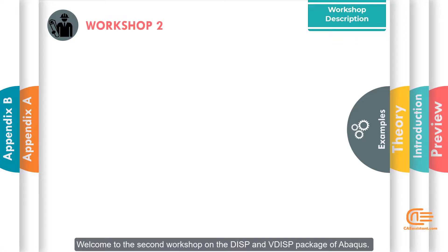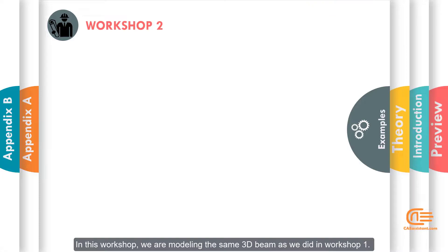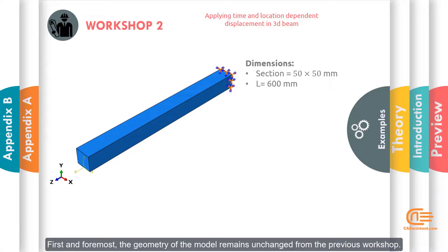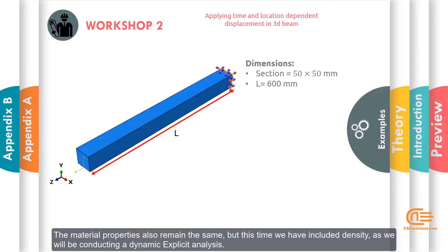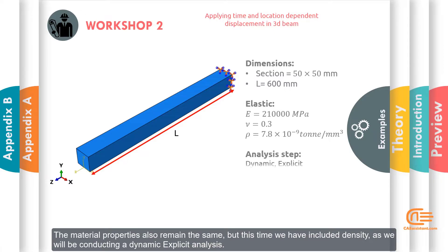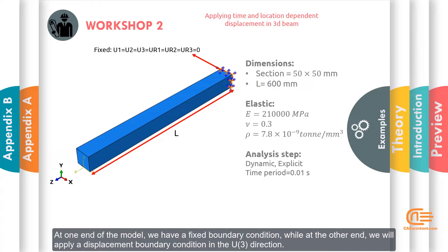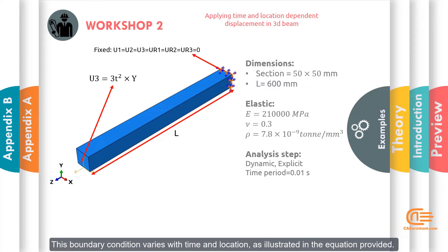Welcome to the second workshop on the DISP and VDISP package of Abacus. In this workshop, we are modeling the same 3D beam as in workshop 1. However, this time we will utilize the VDISP subroutine to apply displacement boundary conditions that vary with both time and location. The geometry of the model remains unchanged, and the material properties also remain the same, but this time we have included density as we will be conducting a dynamic explicit analysis. The time period for our analysis will be 0.01 seconds. At one end of the model, we have a fixed boundary condition, while at the other end, we will apply a displacement boundary condition in the U3 direction. This boundary condition varies with time and location as illustrated in the equation provided, where Y represents the second component of the coordinates for each node.